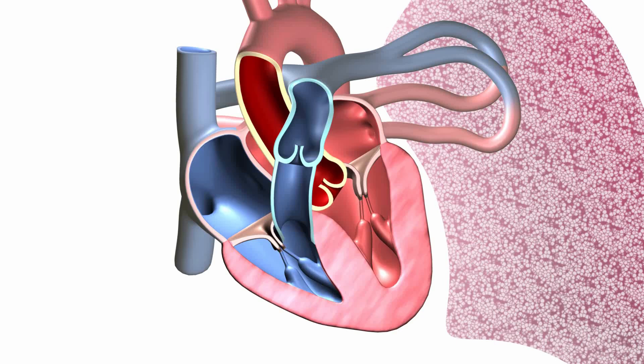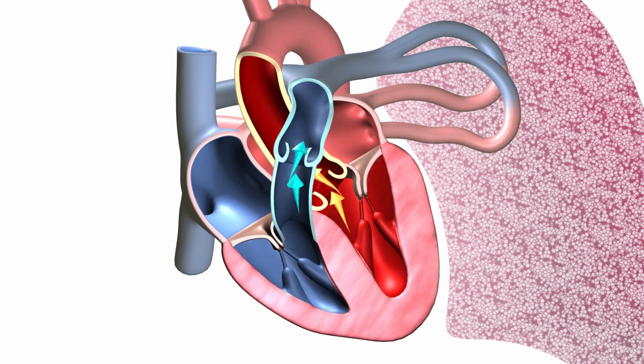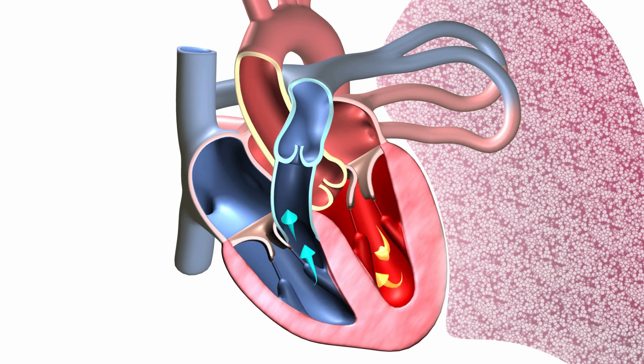The heart has four different valves and the way the heart is made is like a circuit. We have the right side and the left side, and like a circuit the blood goes through the right side and then through the left side. When we talk about the right side, we have blood returning from the whole body, and the important valves on the right side are the tricuspid and the pulmonic valves. These valves are very important in preventing backflow of blood so that everything keeps moving forward.